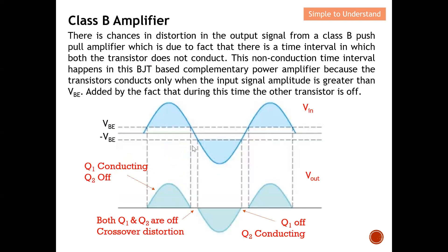There is a crossover distortion in the output waveform of a Class B push-pull amplifier, due to a time interval in which both transistors do not conduct. This non-conduction interval occurs because the transistor only conducts when the input signal amplitude is greater than Vbe. Remember, for a transistor, if you are less than Vbe you cannot bias it — you need at least Vbe to achieve biasing, otherwise the transistor remains off.